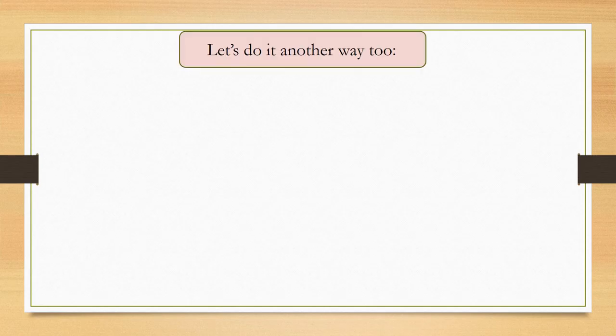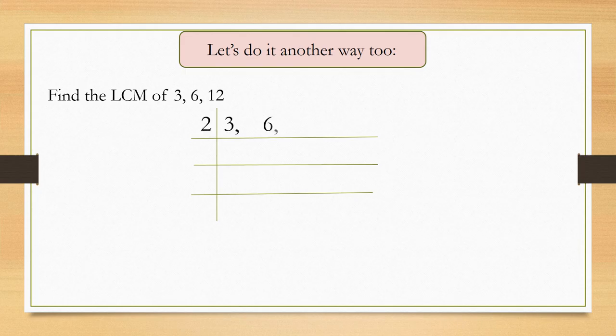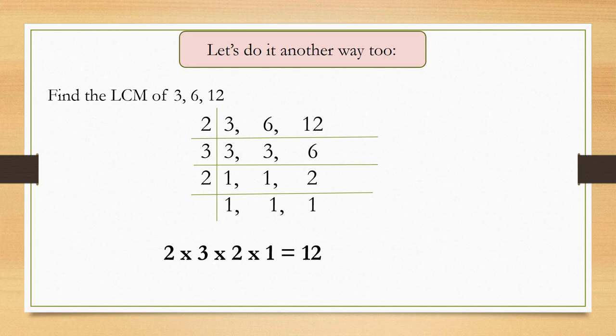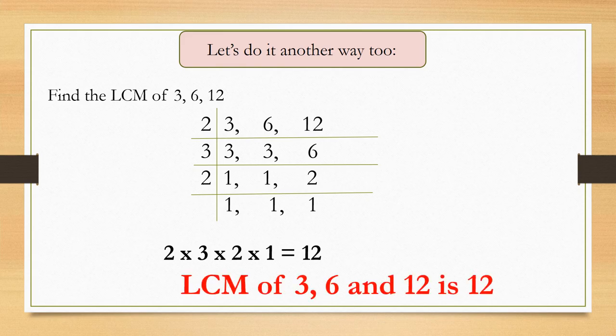Let's do it another way too. Find the LCM of 3, 6, 12. As you see, 2 times 3 times 2 times 1 equals 12. So, LCM of 3, 6 and 12 is 12.